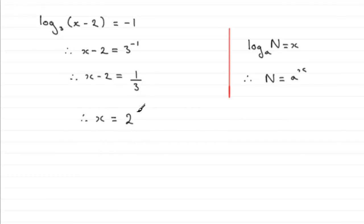So you get x equals 2 and a third, and you could leave it like that, or you could write it as a top-heavy fraction. In other words that would be seven thirds, so x equals seven thirds. Nice straightforward one there on logs.